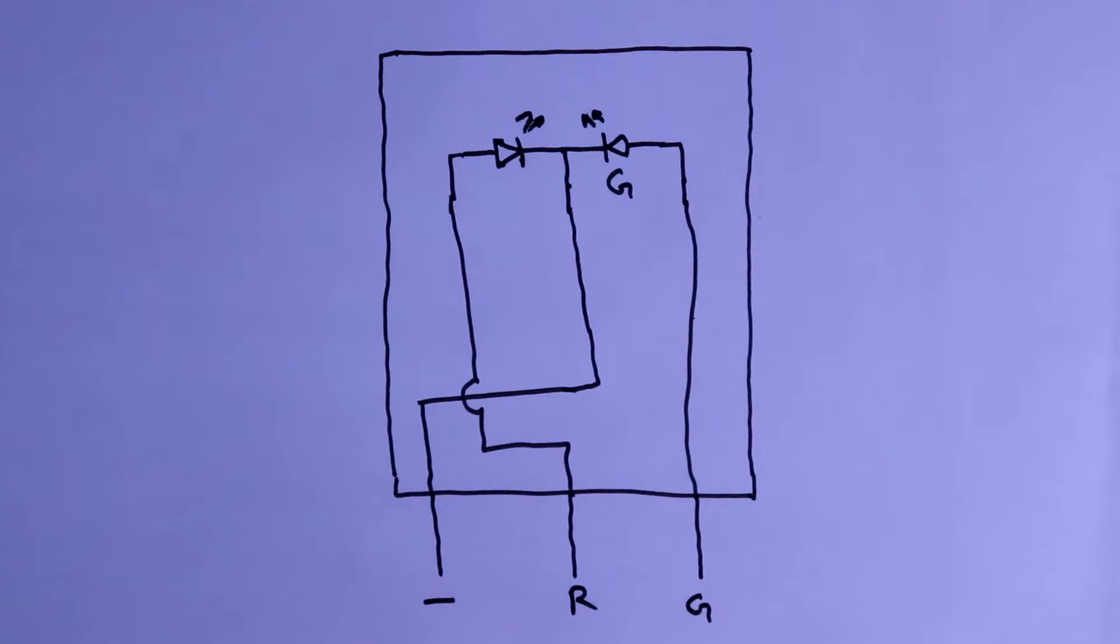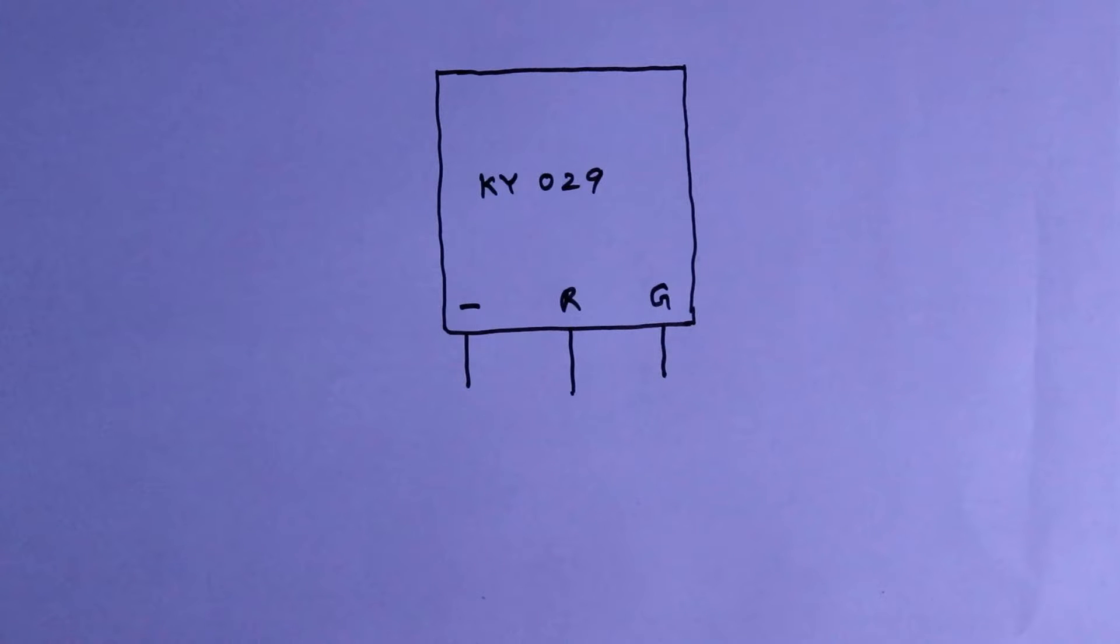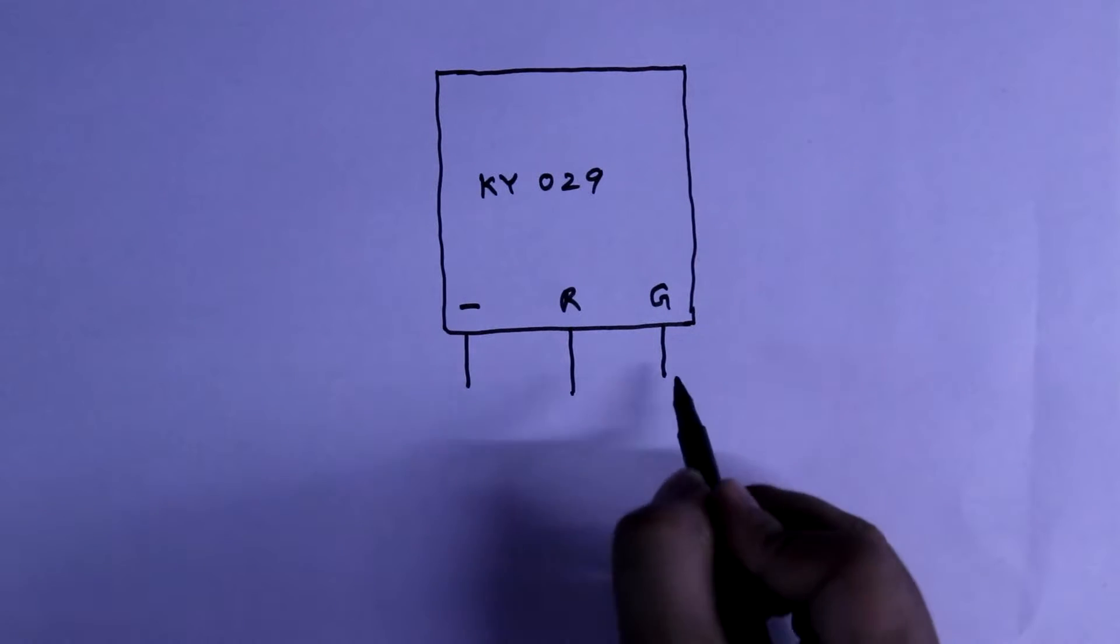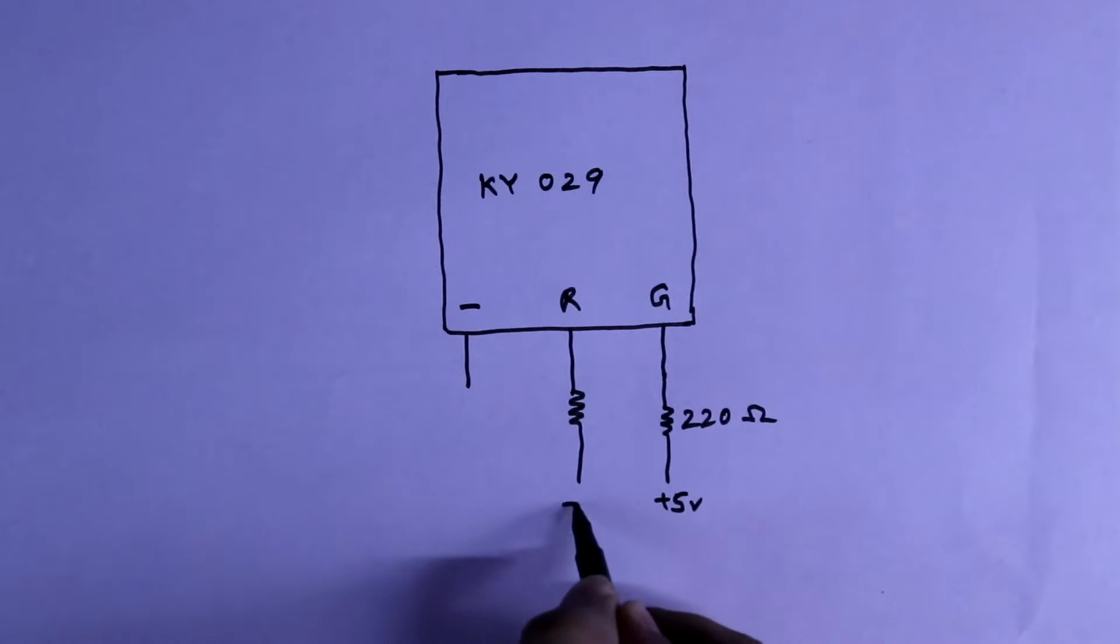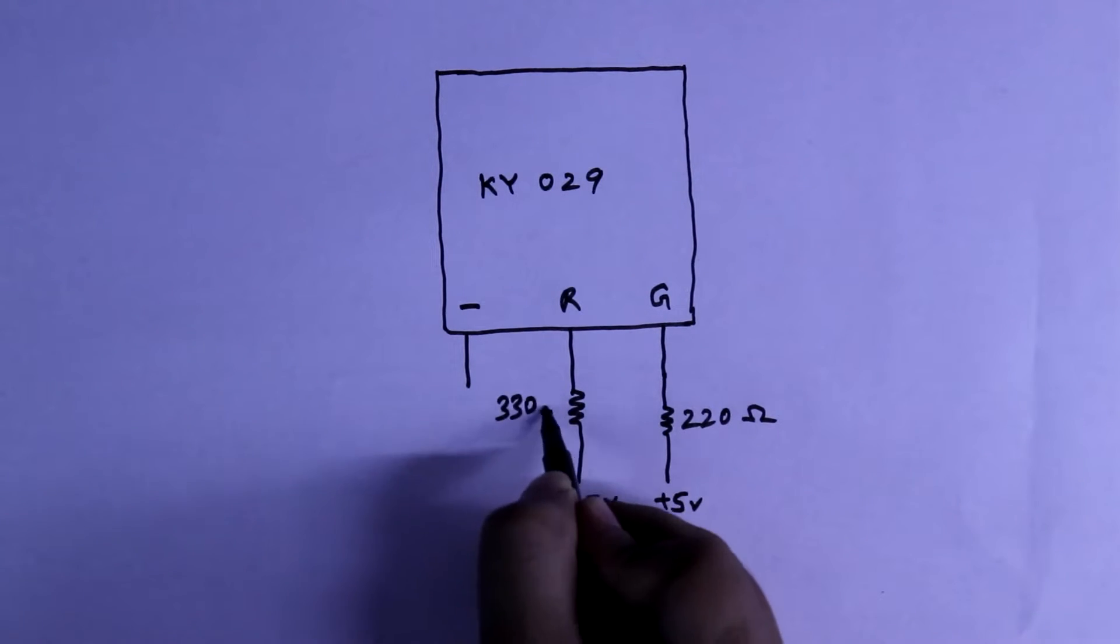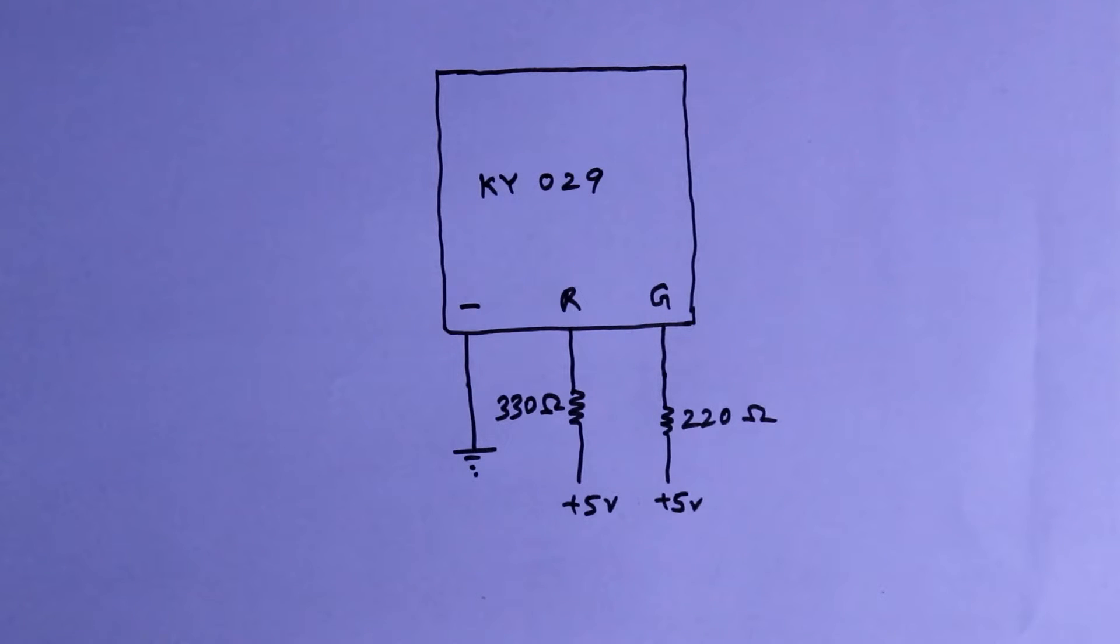Now let's see the practical circuit. To connect this module with power supply, we have to connect resistor with green pin and red pin because we directly cannot supply 5 volt to the LED. With green pin, we have to connect 220 ohms. With red pin, we have to connect 330 ohms. And negative pin is connected to the ground. So, this is how we should connect this module to the power supply or any other external circuit.